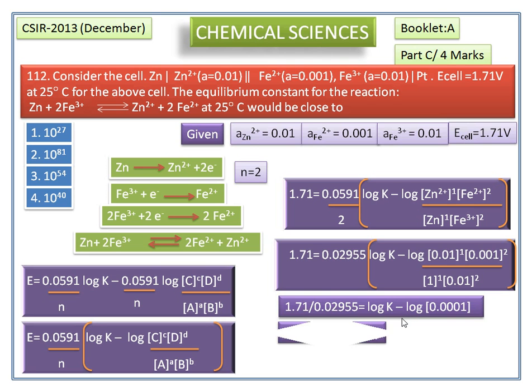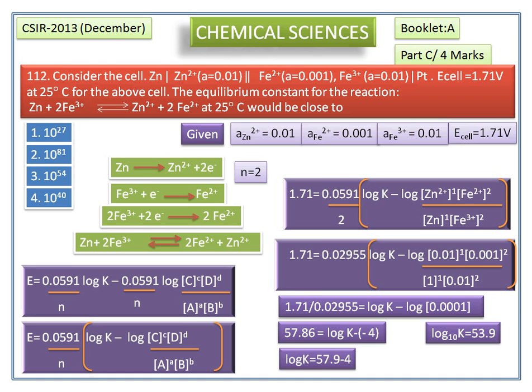Now we simplify this equation. We get the value of log K based on n equal to 53.9. This is close to 54. So equilibrium constant K would be close to 10 to the power of 54.